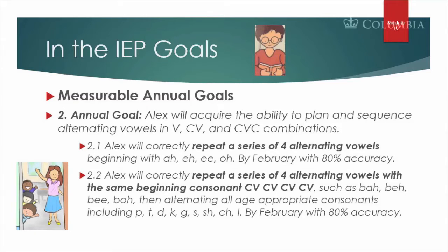The second annual goal addresses the vowel variability. The goal for Alex is to acquire the ability to plan and sequence alternating vowels in V, CV, and CVC combinations. This boy is young, only two years ten months old. He really wants to develop clearer speech, and we learned in the eval that he practiced to say 'mommy' instead of 'ma-mom' and 'daddy' instead of 'dad-dom.' This is going to take some work and lots of repetition.